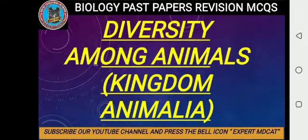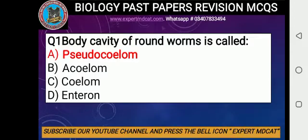Bismillahirrahmanirrahim, Assalamu Alaikum everyone. This is Expert MDCAT Platform and today we are going to discuss the MCQs of Kingdom Animalia, Chapter Number 10 from First Year. The first MCQ is: body cavity of roundworms is called?